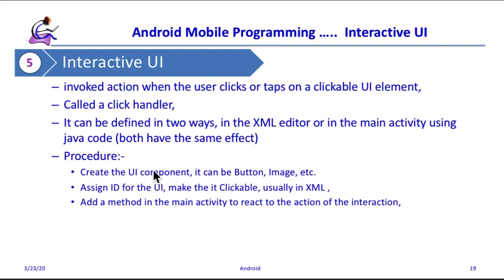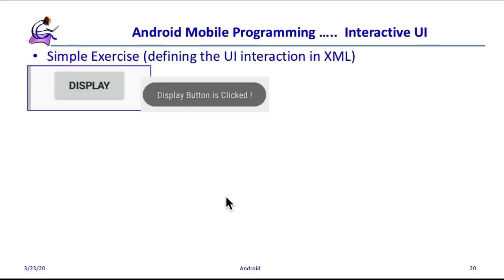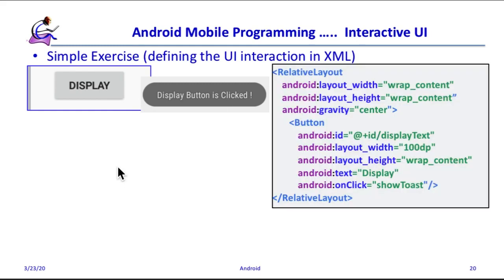A component will be created, then made clickable, and then some action will be associated with it. For example, assuming this is your mobile app and you have added one button called 'Display'. If a person clicks Display, we say the display button is clicked, and if repeated, this message will be displayed on the screen of your mobile app.